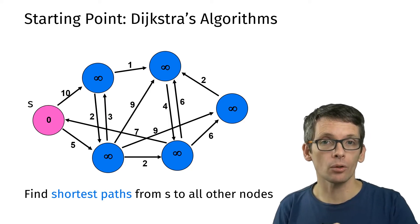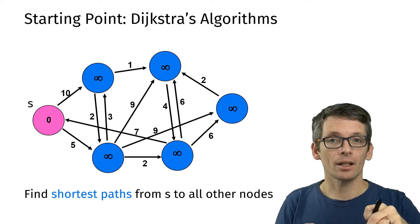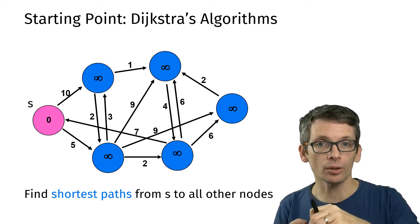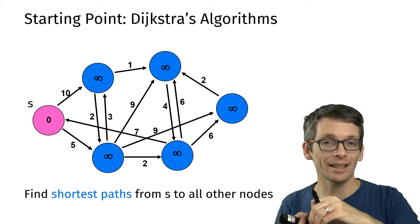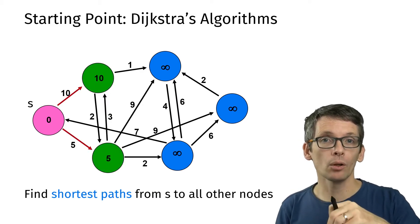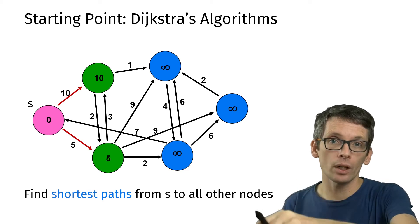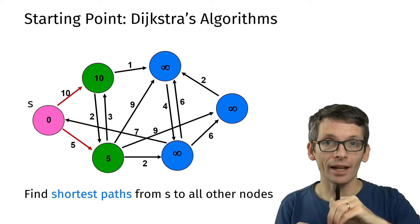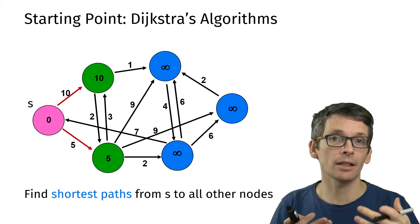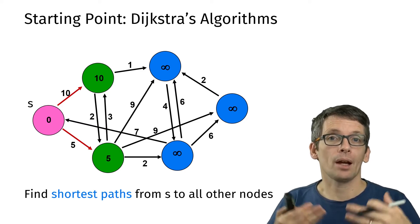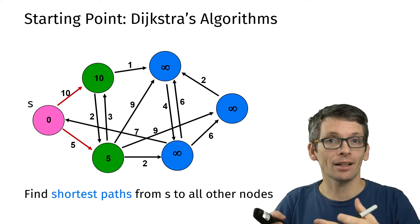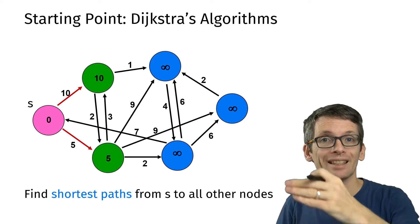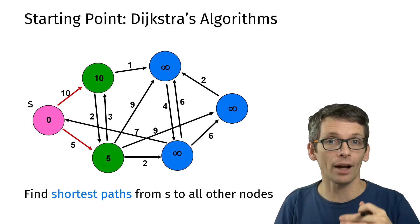Then we process the nodes one by one, always starting with the so far unprocessed node with the smallest distance, so that is currently s, and we look at whether we can reach the adjacent nodes via s with a smaller distance than the distance that we already know. Because we don't know any distances yet, this is indeed the case, so we now can reach one node with a distance of 10, the other one with a distance of 5.